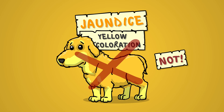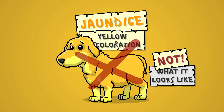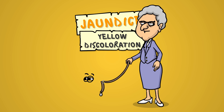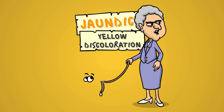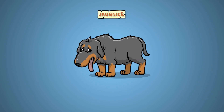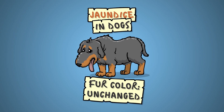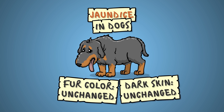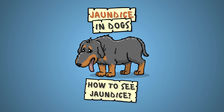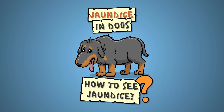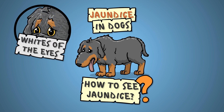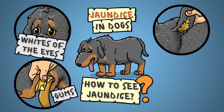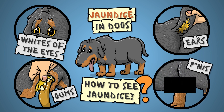Jaundice in dogs is not that apparent to the layperson, so there's no need to worry about accidentally losing your dog in a yellow room. Fur color remains unchanged and pigmented areas on the skin mask the yellow discoloration, so your best shot at spotting jaundice is on the whites of the eyes, on the gums, on the pale insides of the ears, and in the case of a male dog, on the surface of the penis.